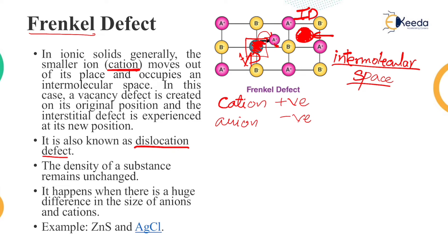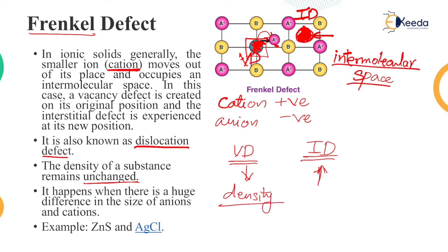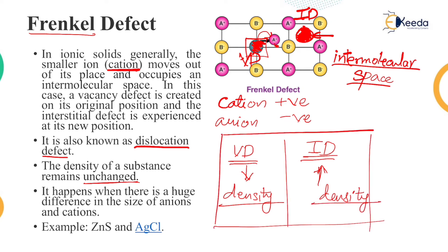The density of the substance remains unchanged in a Frenkel defect — very important. Because of the vacancy defect the density decreases, but because of the interstitial defect the density increases, making the overall density remain unchanged. It happens when there is a huge difference in size of anions and cations. Examples are zinc sulfide and AgCl, which is silver chloride.